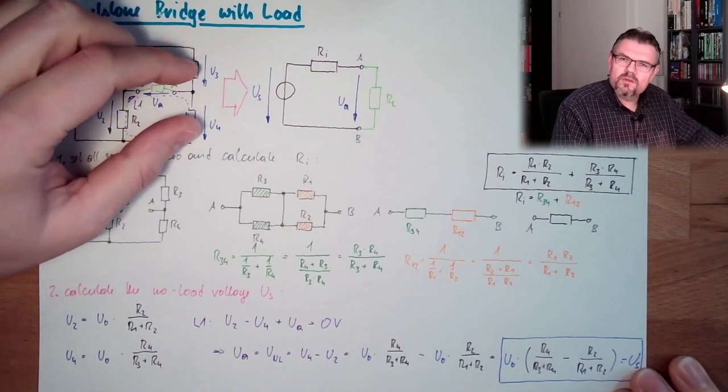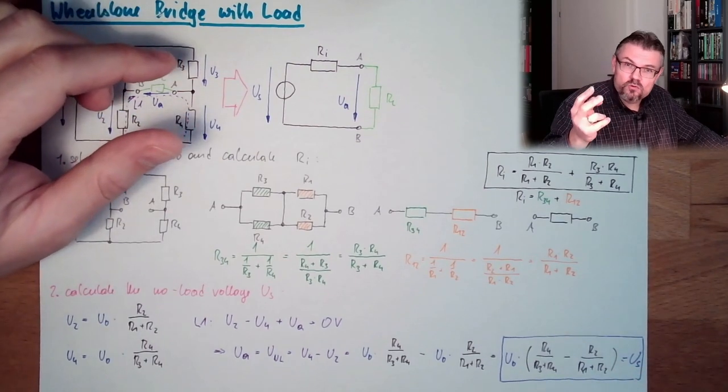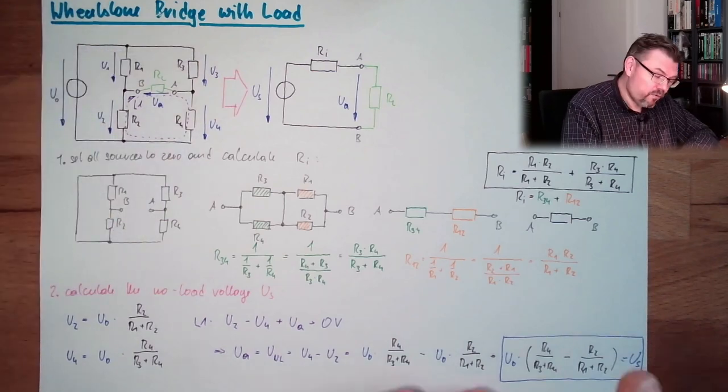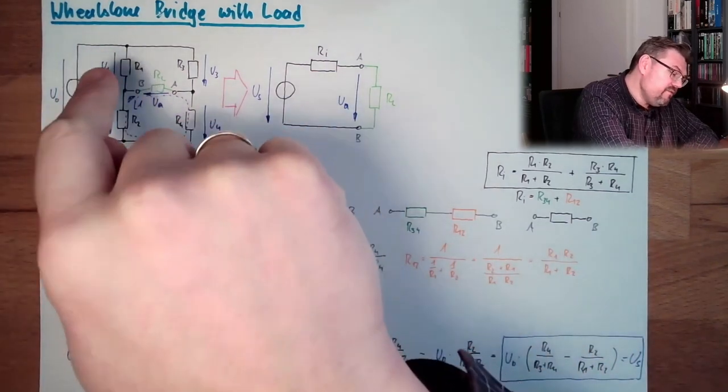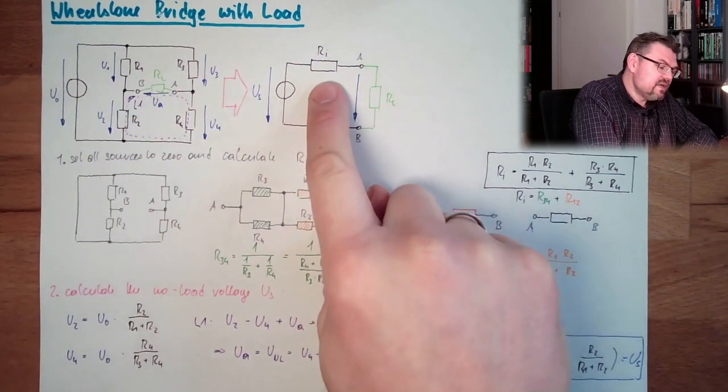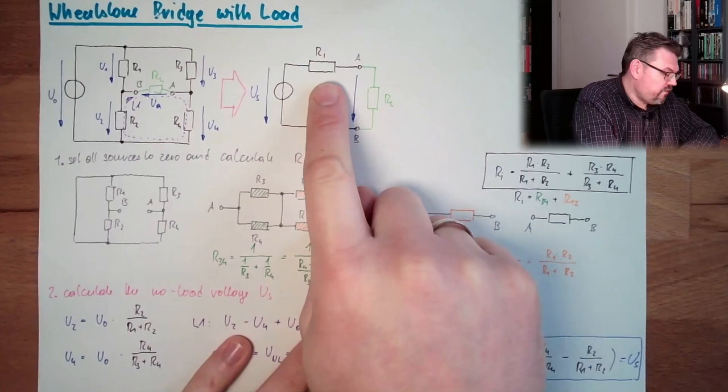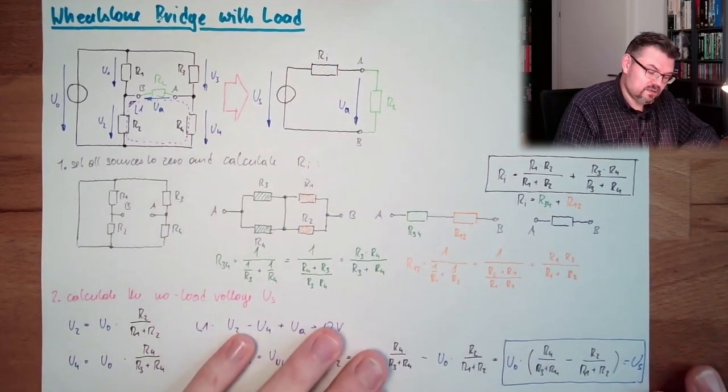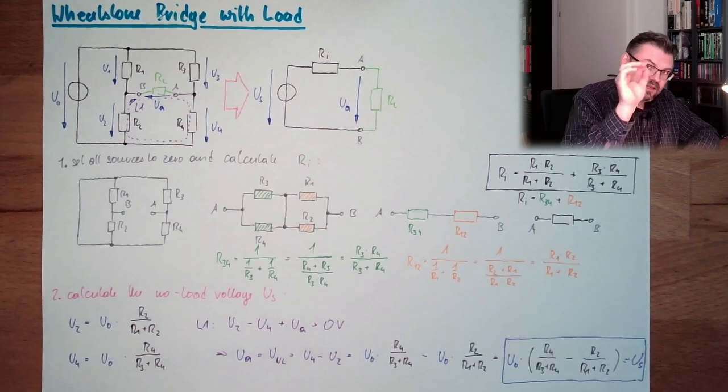If we have those two parallel, it's only half. But we add those two, so we're ending up with one resistance. With one, exactly one. If all resistors are equal, the internal resistance of our fictional voltage source is exactly that resistor.